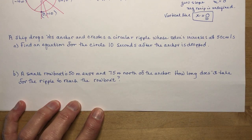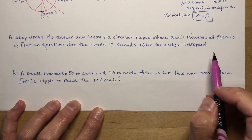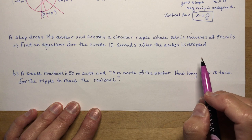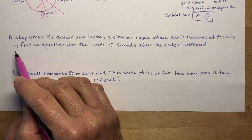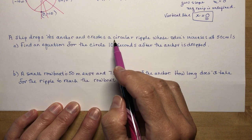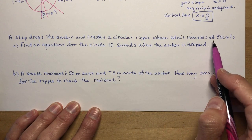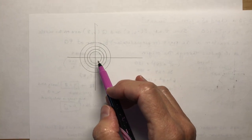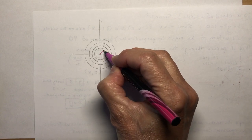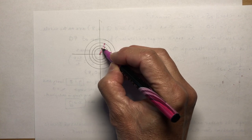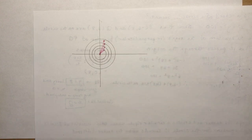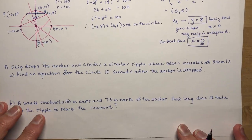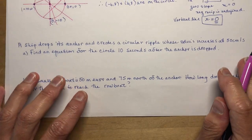Finally, a word problem. A ship drops its anchor and creates a circular ripple whose radius increases at 50 centimeters per second. You've seen this before — the ripple goes out further and further. Find the equation for the circle 10 seconds after the anchor is dropped.